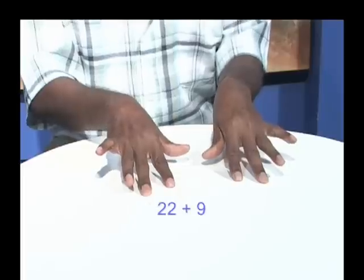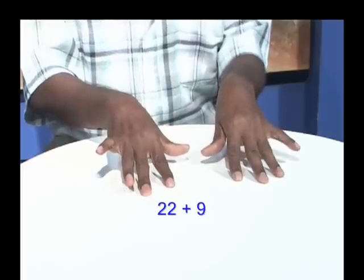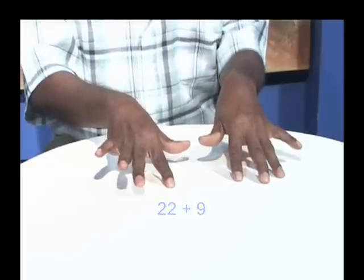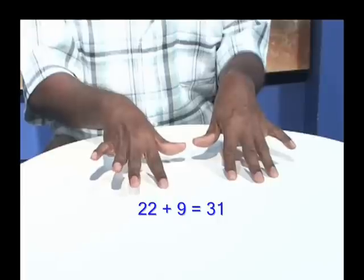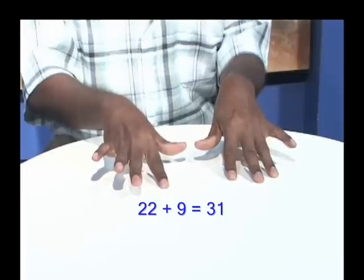If I wanted to add 9 to that, I'll add 10 and minus 1. And notice I have the answer immediately on my hands, 31. So all I have to do is do the manipulation of adding 10 and minus 1, and the fingers will tell me the answer.